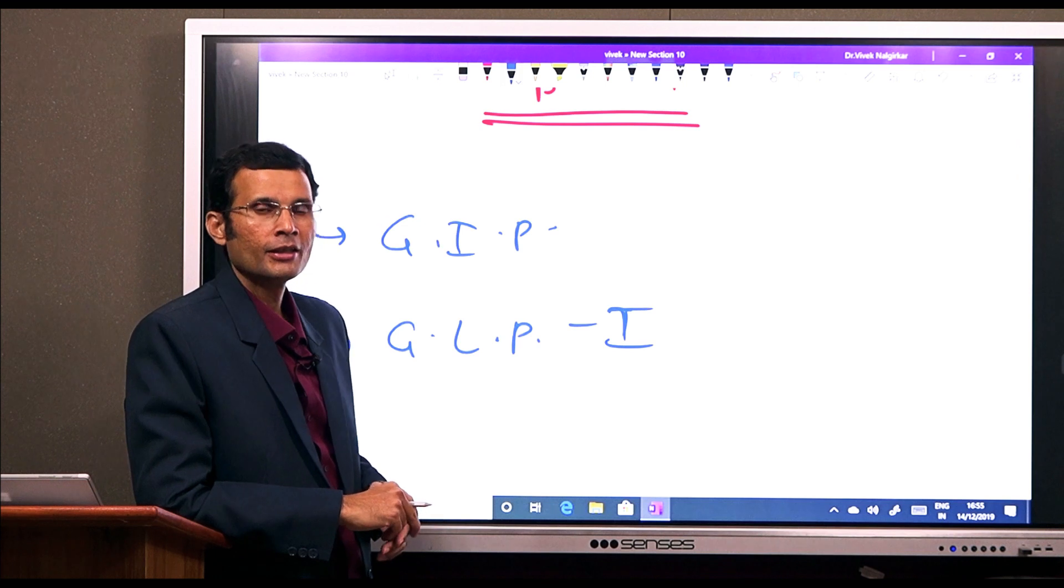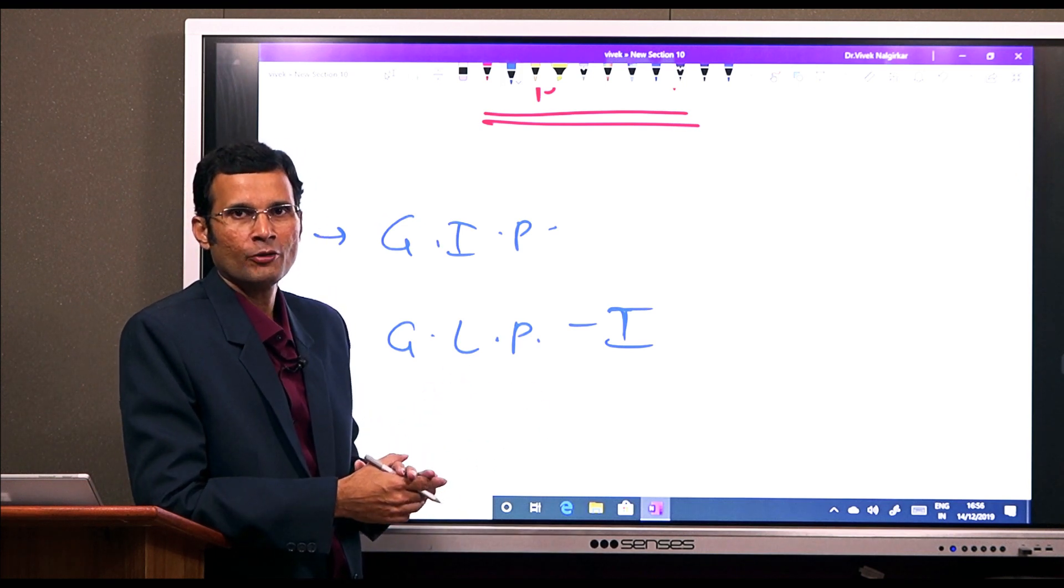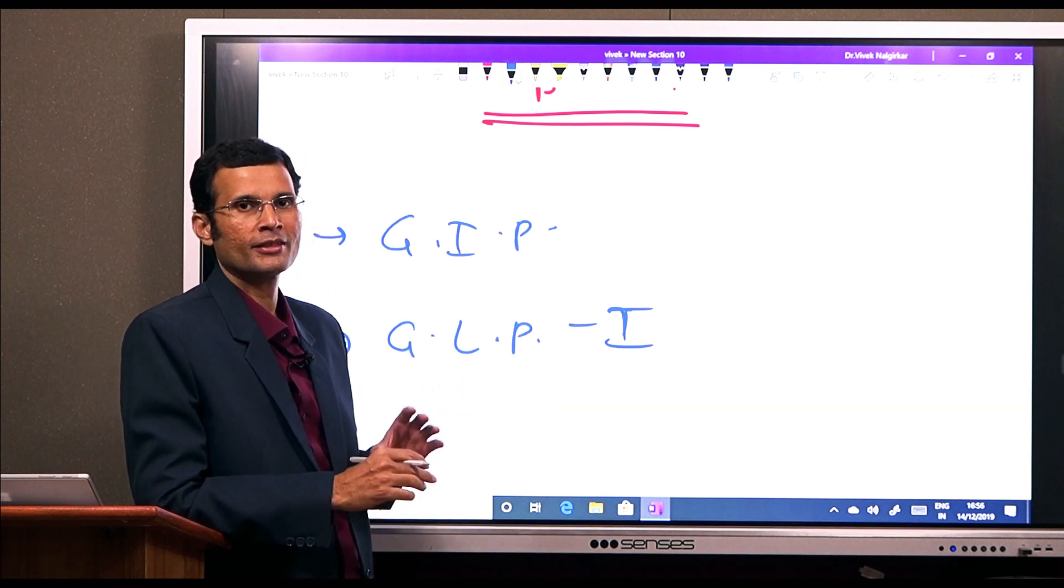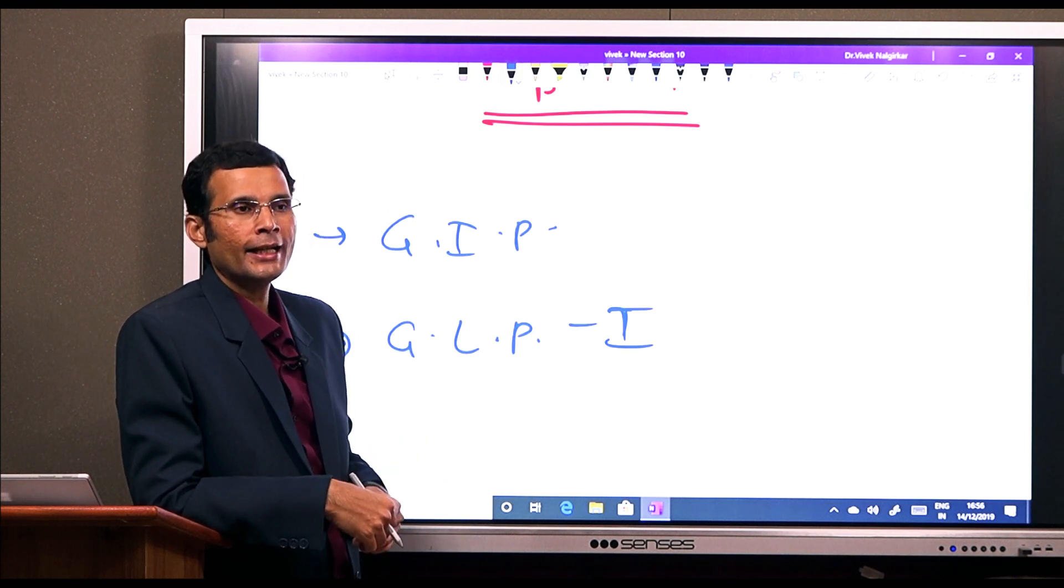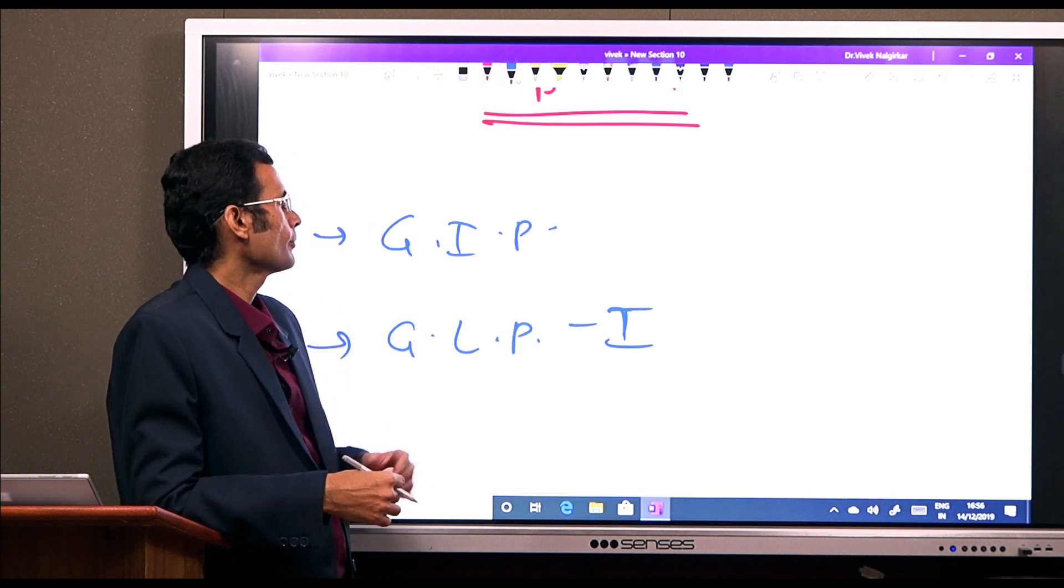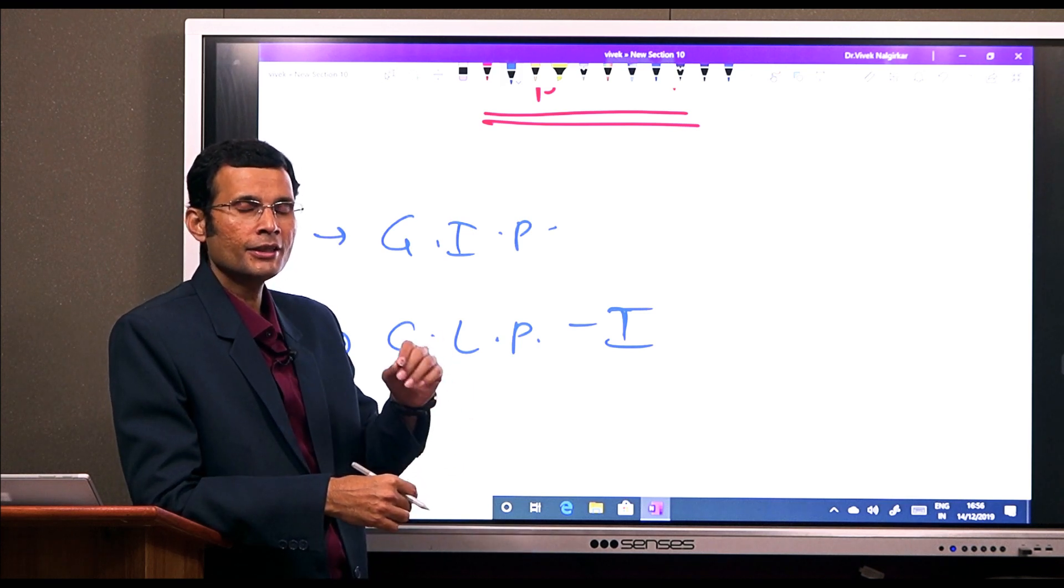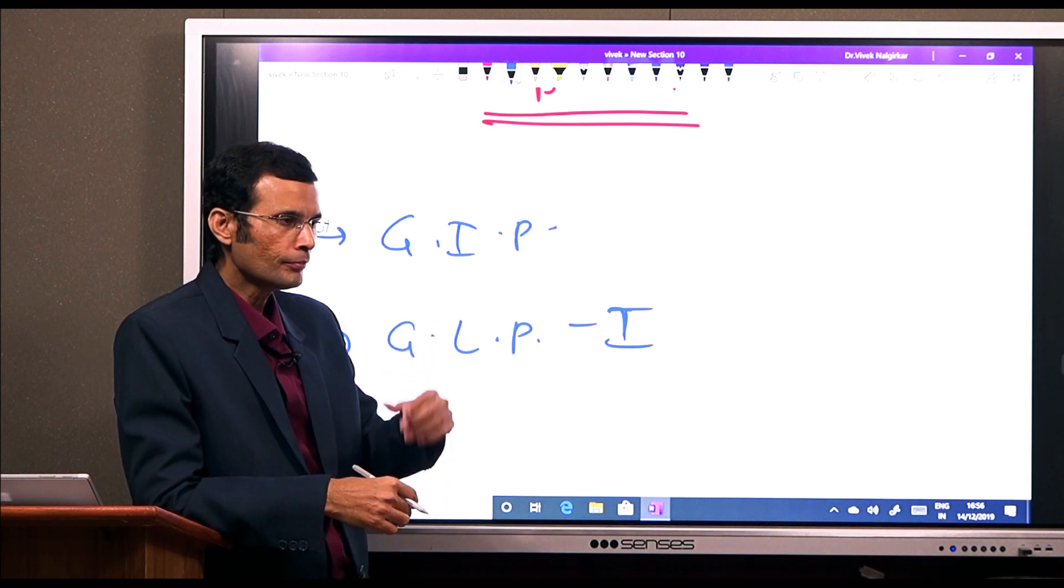GIP, gastric inhibitory peptide. When it was discovered, it was named as gastric inhibitory peptide. But then later on, it was found that its role in gastric inhibition...